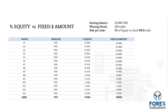Let's say you start with a $10,000 account and go on a 100-trade winning streak, risking 1% of your equity per trade versus a fixed $100 per trade. At the end of 100 winning trades, with the percent equity model your account would be $27,048. With the fixed dollar amount, your account would only be $20,000. The percent equity model completely outperforms the fixed dollar amount by a large margin.